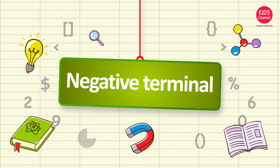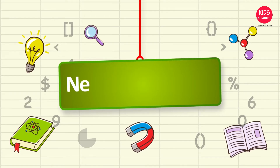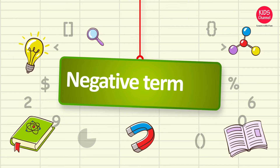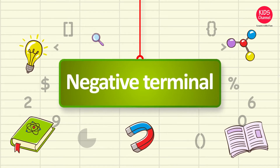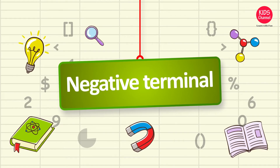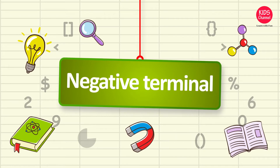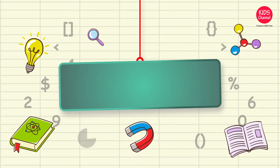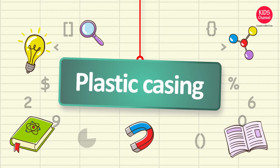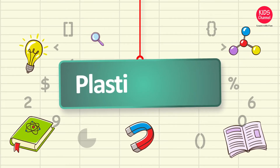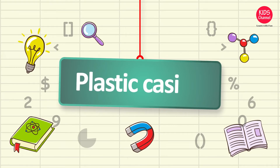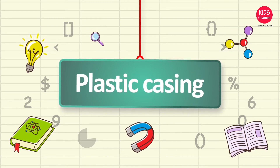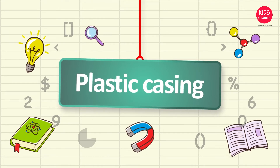Negative terminal: N-E-G-A-T-I-V-E, T-E-R-M-I-N-A-L. Negative terminal. Plastic casing: P-L-A-S-T-I-C, C-A-S-I-N-G. Plastic casing.